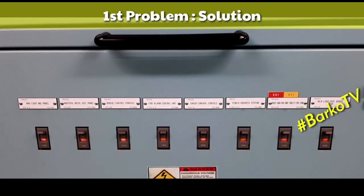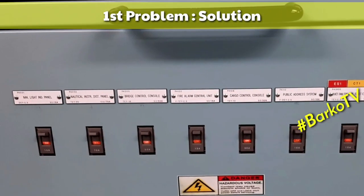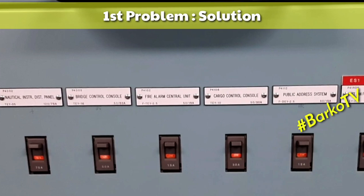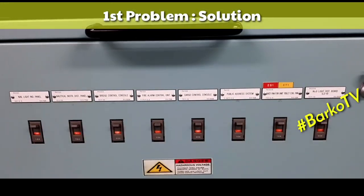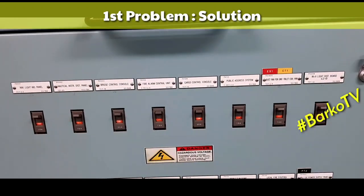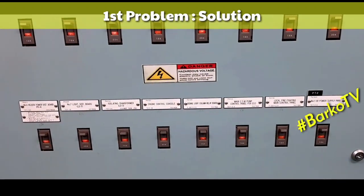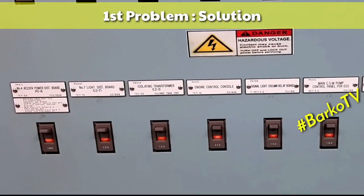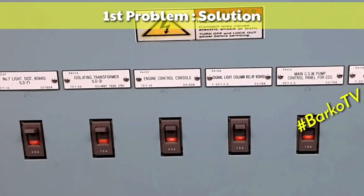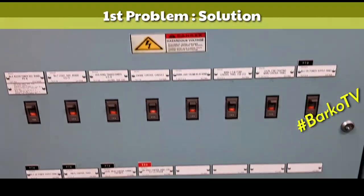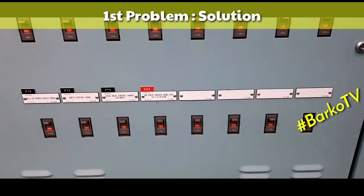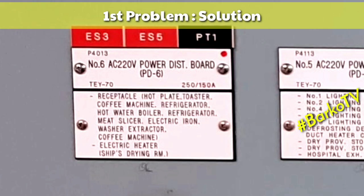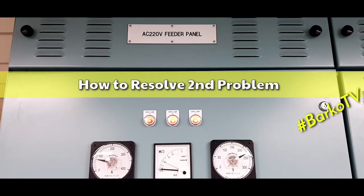The first step is isolation — turning off the breakers one by one under the 220V feeder panel. As you can see in the video, it shows the breakers under the 220V feeder panel. We found out that PD-6 is the location where the unit is grounded, which is the hot water boiler in the galley.